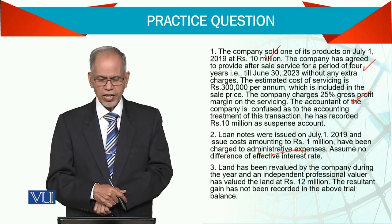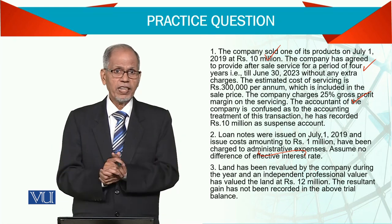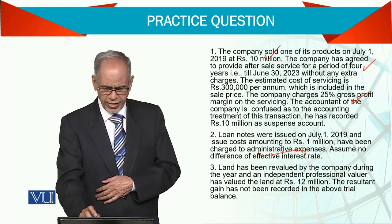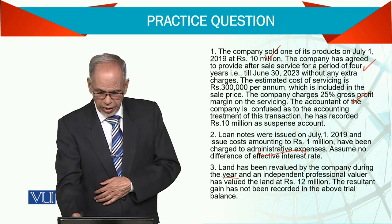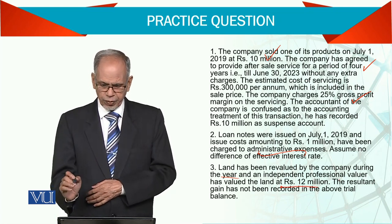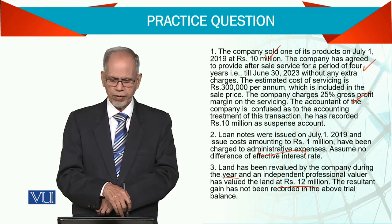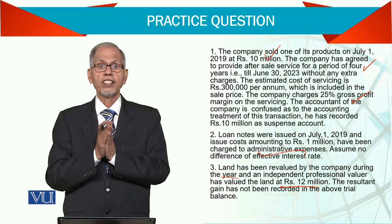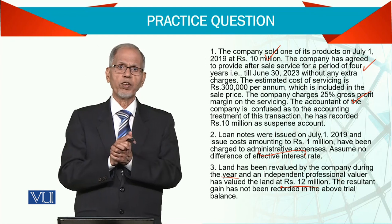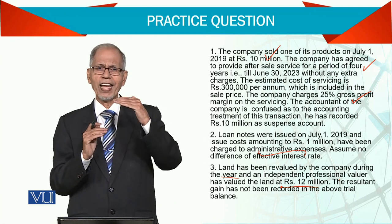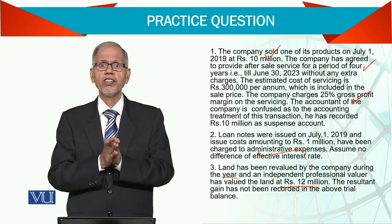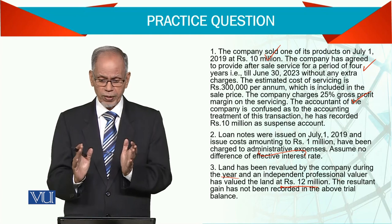Next, land has been revalued. Many assets undergo revaluation, and land is an important one. An independent valuer has valued the land at 12 million. The resultant gain has not been recorded in the trial balance because the revaluation was done at the end of the year. We need to incorporate it, as the asset must be shown at its value at that point in time. If management decides to revalue assets, the valuation must be done by a qualified professional — only a professional can do it.